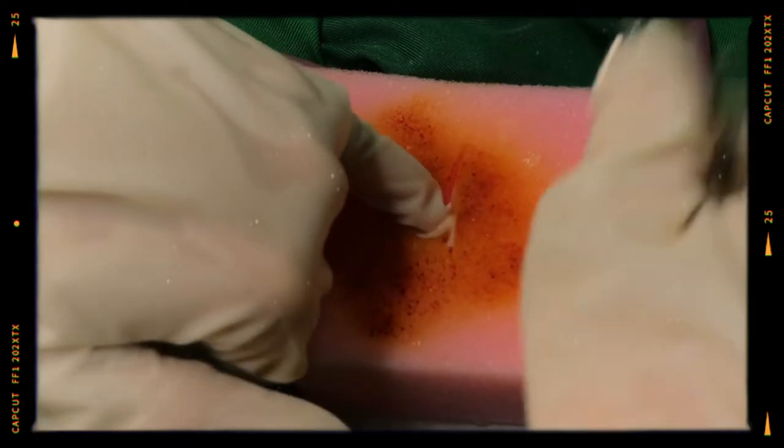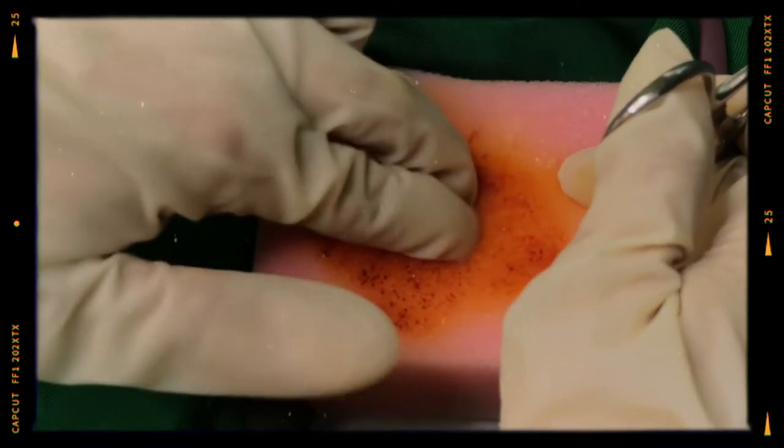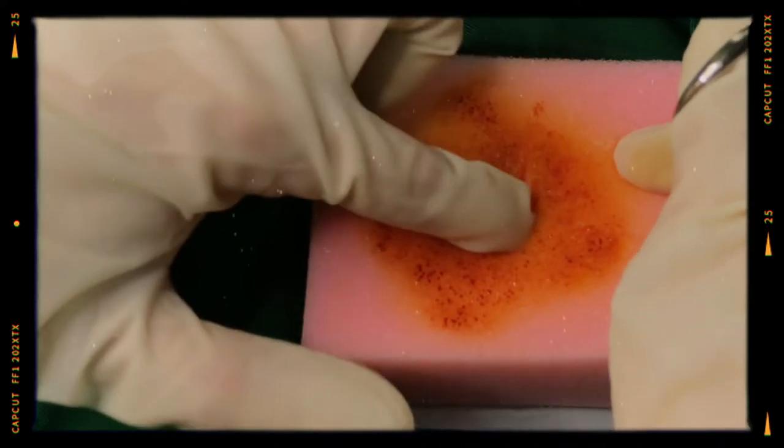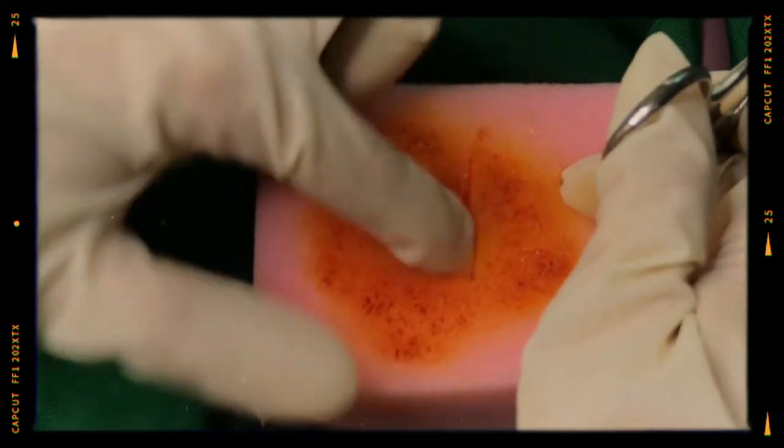After the pleural cavity has been entered, insert the gloved finger to explore for adherent lung and then further enlarge the opening in the pleura by inserting a large kelly clamp and spreading it.